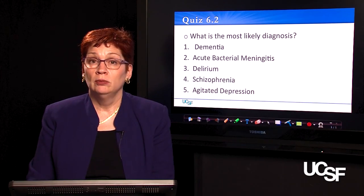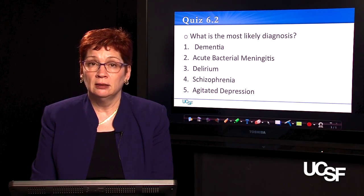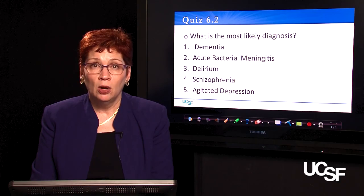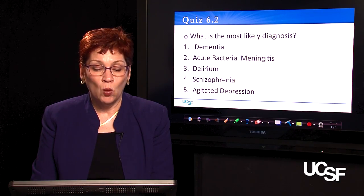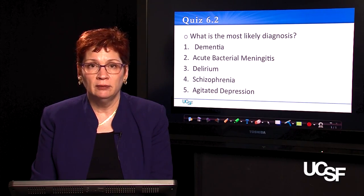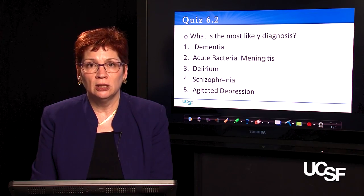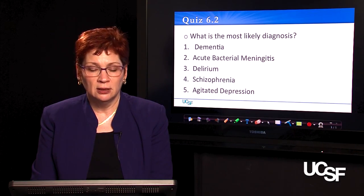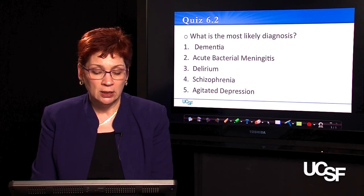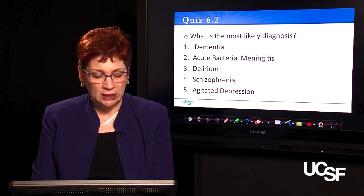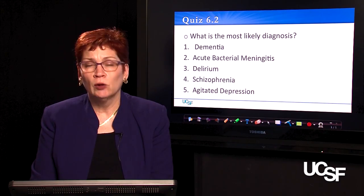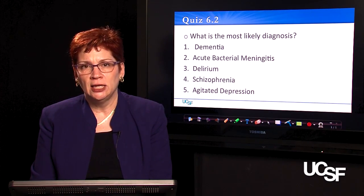So, let's make a diagnosis. From the information you have now, what is the most likely diagnosis? One: dementia. Two: acute bacterial meningitis. Three: delirium. Four: schizophrenia. Or five: agitated depression. Choose your answer.